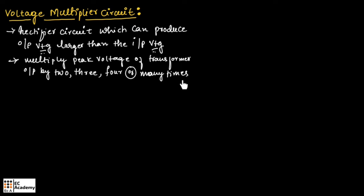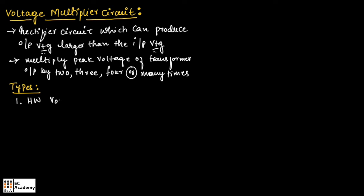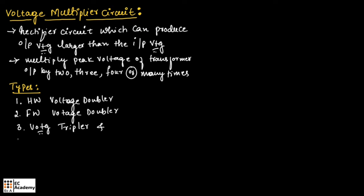There are 4 types of voltage multiplier circuit. The first one is half wave voltage doubler, the second one is full wave voltage doubler, the third one is voltage tripler, and the fourth one is voltage quadrupler. In today's video, we will understand half wave voltage doubler and full wave voltage doubler. Now, let us understand half wave voltage doubler.